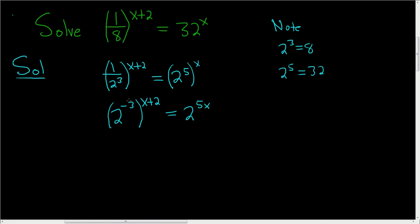Now we can distribute the negative 3. So negative 3 times x is negative 3x, and negative 3 times 2 is negative 6. And on the right-hand side, we still have 2 to the 5x.